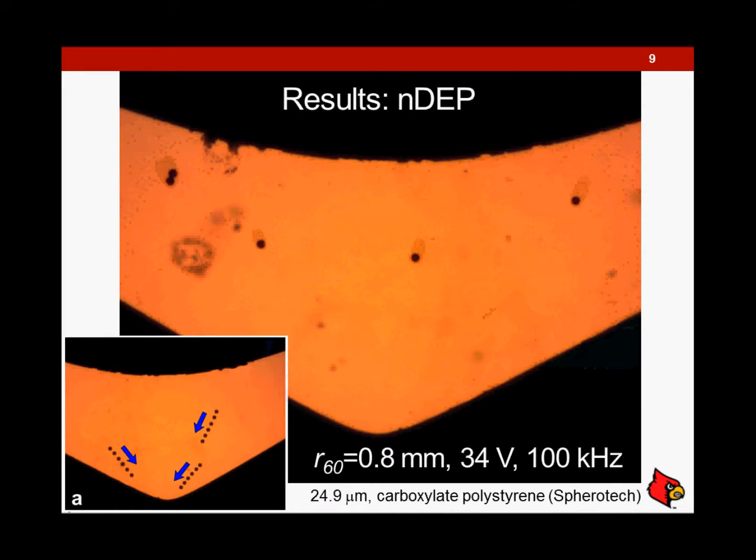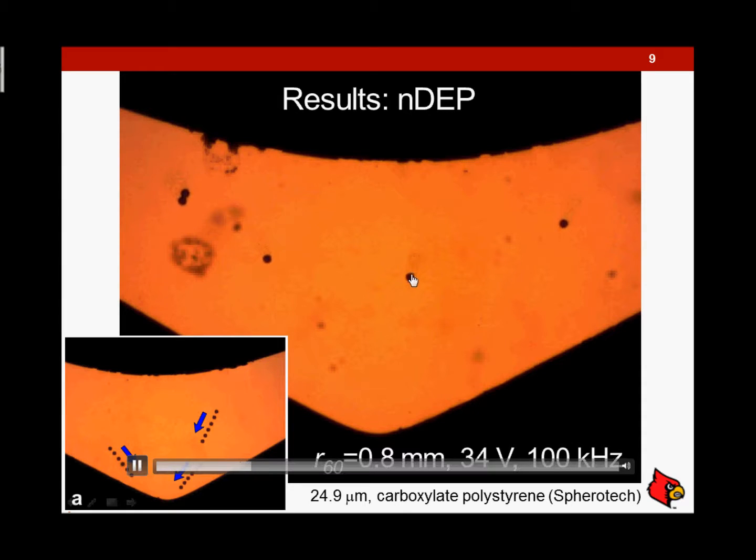Here we have particles going towards the origin once we apply the signal. Here's it at 34 volts at 100 kilohertz. You also see pearl chaining occurring here because the electric field is going across. And these are carboxylate-modified polystyrene particles. Under these conditions, they'll experience negative dielectrophoresis.